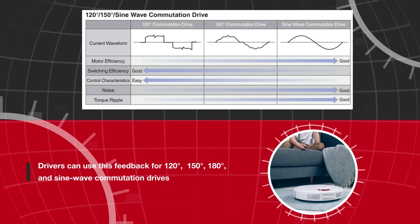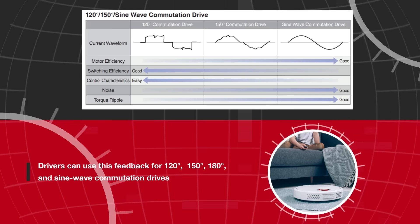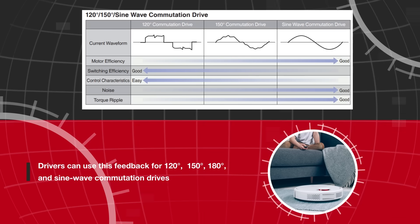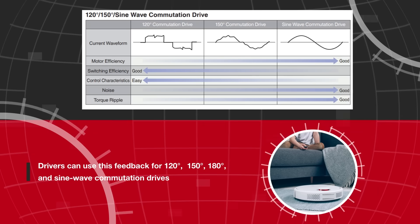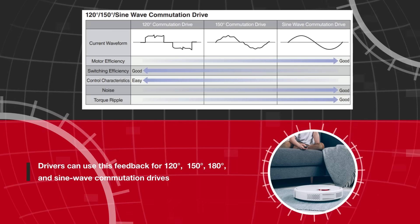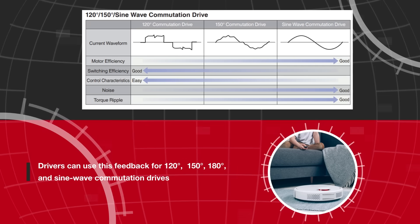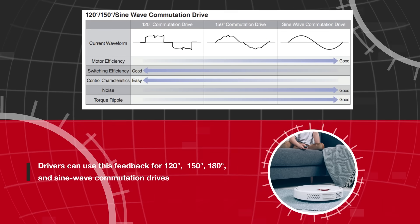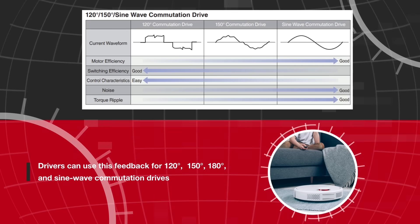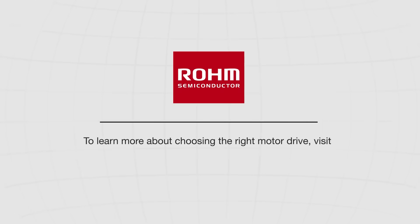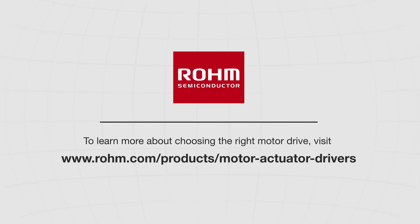Drivers can use this feedback for 120 degree, 150 degree, 180 degree, and sine wave commutation drives in order to achieve low noise, low vibration, high efficiency, and low torque ripple. To learn more about choosing the right motor drive, visit www.roam.com/products/motor-actuator-drivers.